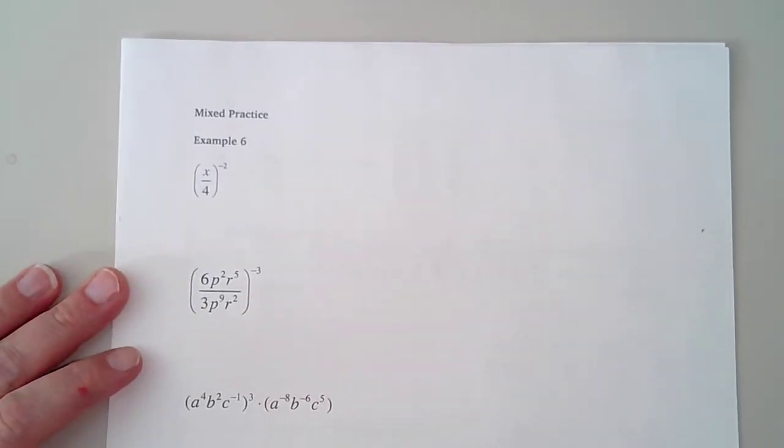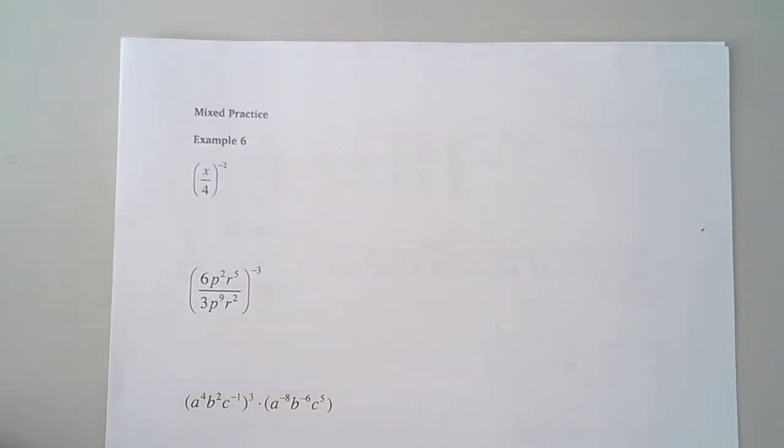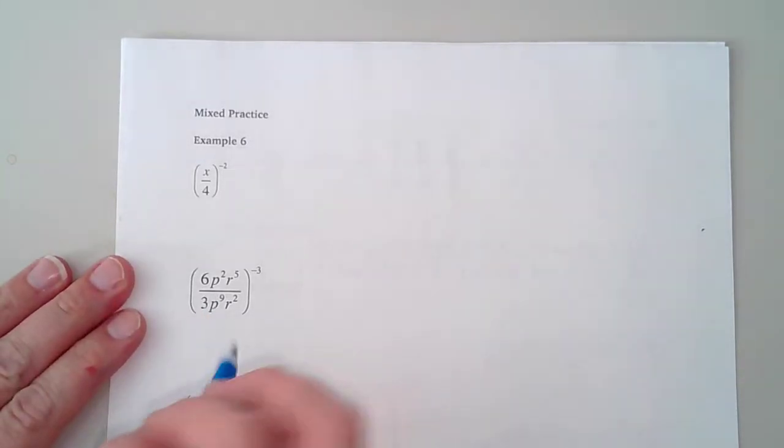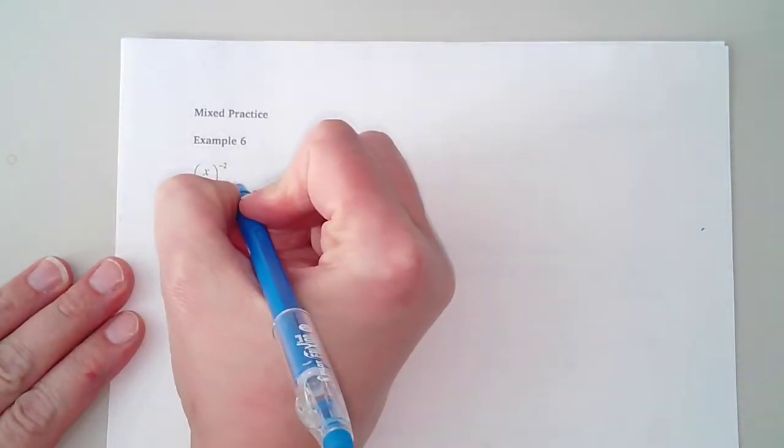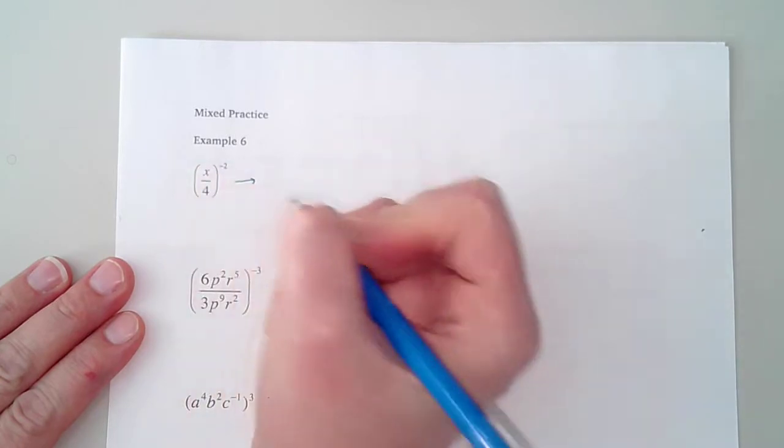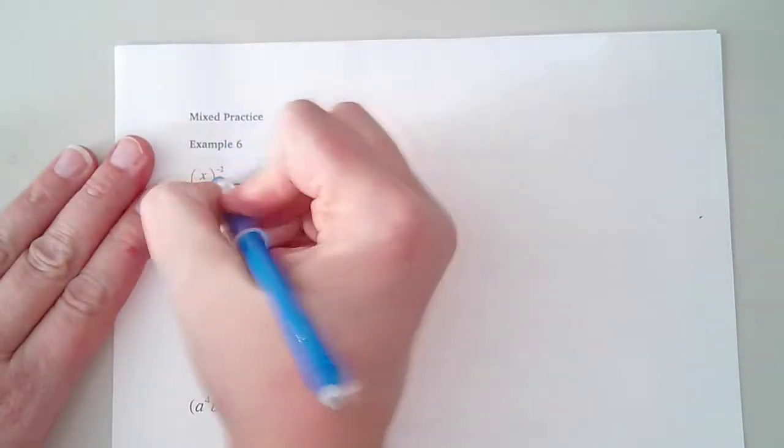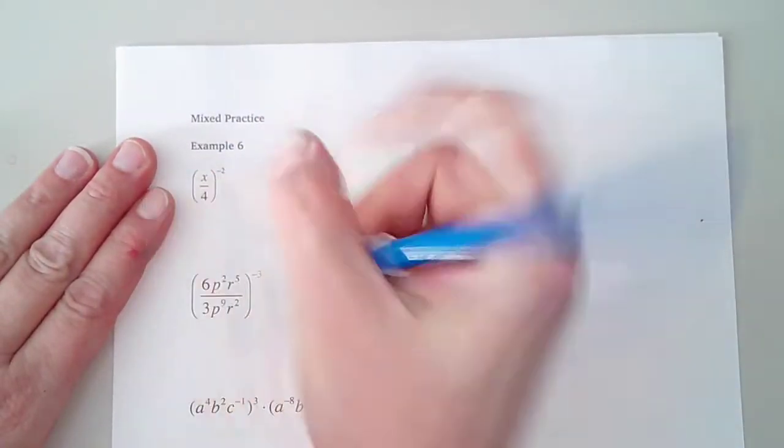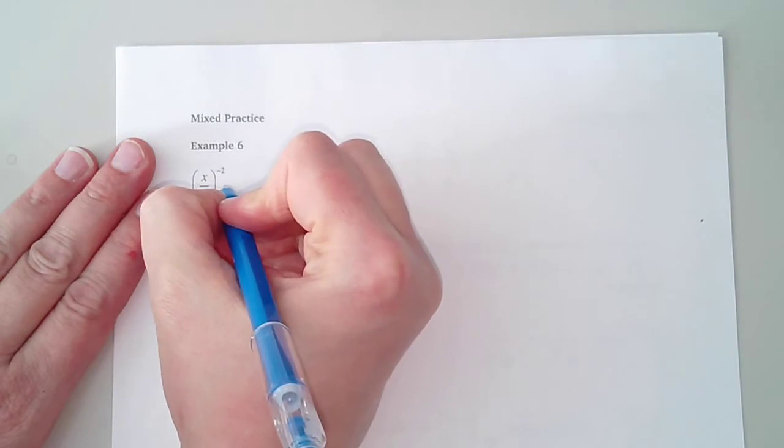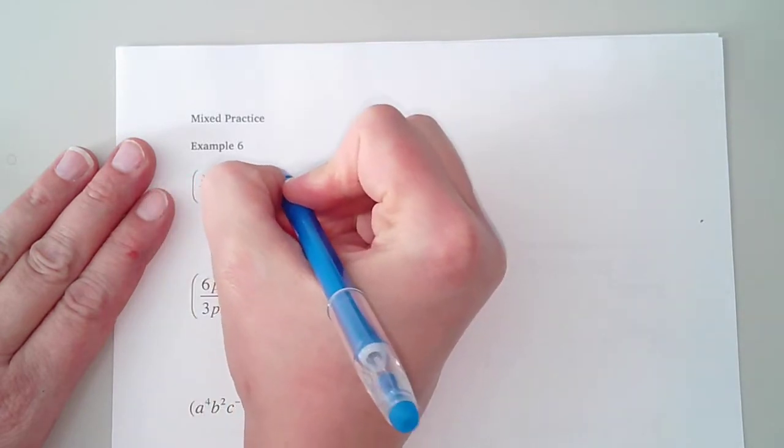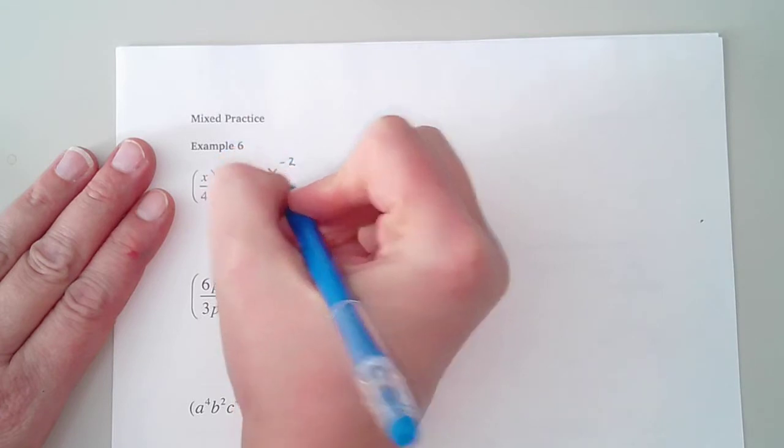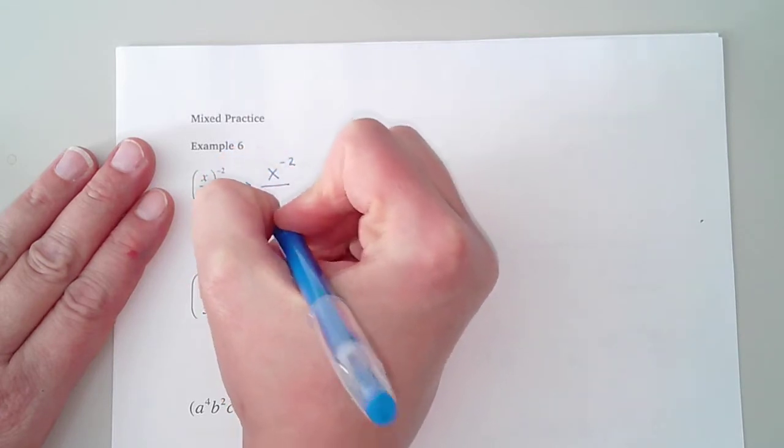So when I look at this first one, I have a fraction being raised to a power. When you're raising a fraction to a power, that power applies to both the top and the bottom of the fraction. So this would really become x to the negative 2 over 4 to the negative 2.